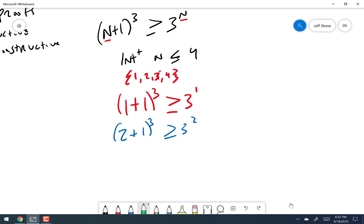Next up is (2+1)³. Is it greater than or equal to that? Agreed? I'm not asking if that's true. I'm just asking if you agree with what I'm doing. Next up is (3+1)³. Is that greater than or equal to 3³? And then the last one is (4+1)³ greater than or equal to 3⁴.